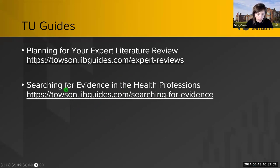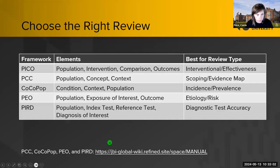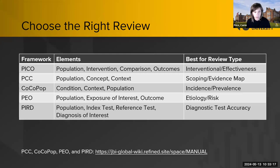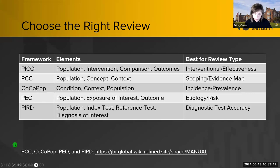Some question frameworks to consider: PICO — population, intervention, comparator, outcomes — for interventions. PCC — population, concept, context — for scoping reviews. CCOCOA-POP — condition, context, population — for incidence and prevalence reviews. PEO — population, exposure of interest, outcome — for etiology and risk. And PIRD — population, index test, reference test, diagnosis of interest — if you're looking at a specific diagnostic test.